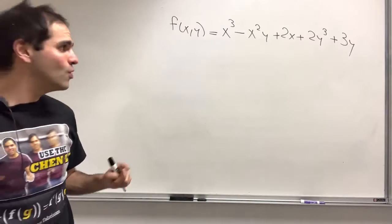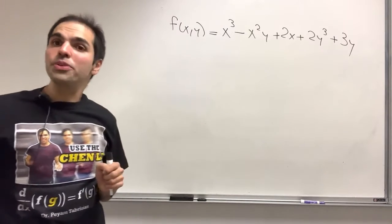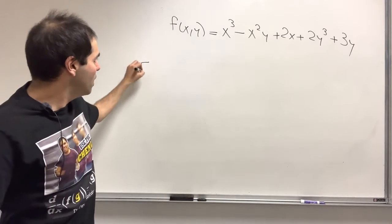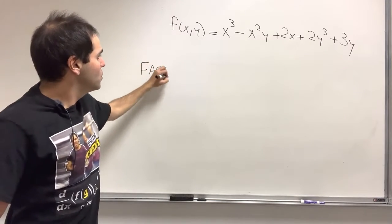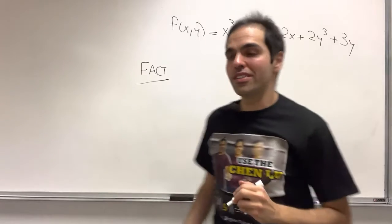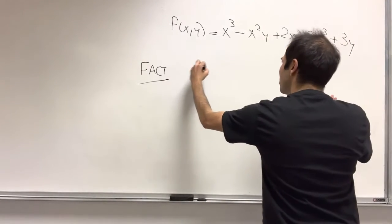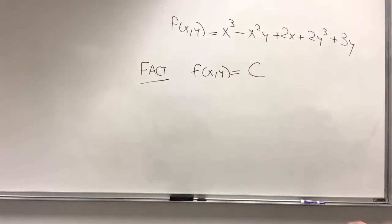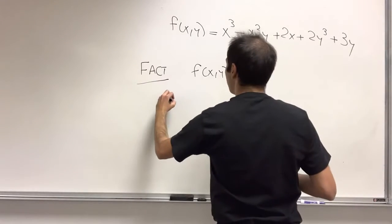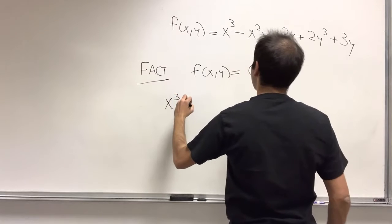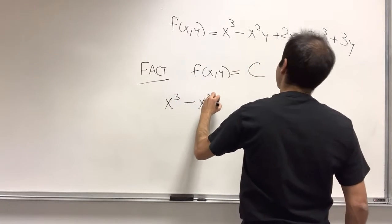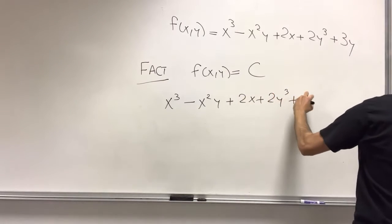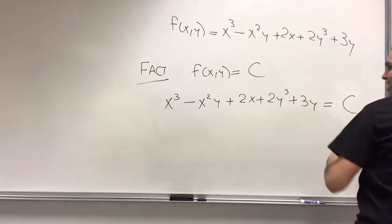And then what does that have to do with anything? So here's a beautiful fact that makes exact equations work. What is the solution? You just let f equal to a constant. So the general solution is f(x,y) equals to a constant. So in this case, the solution becomes the solution curve x cubed minus x squared y plus 2x plus 2y cubed plus 3y equals to a constant.